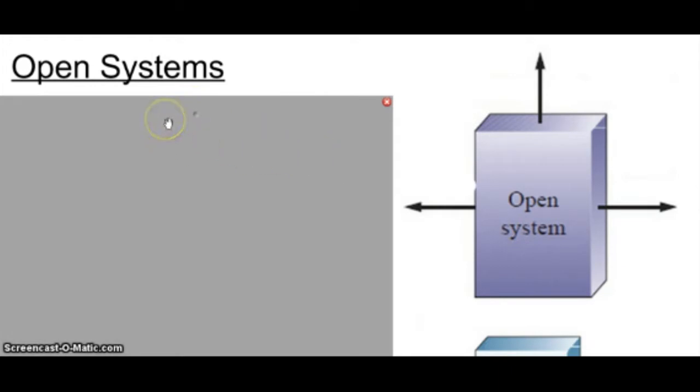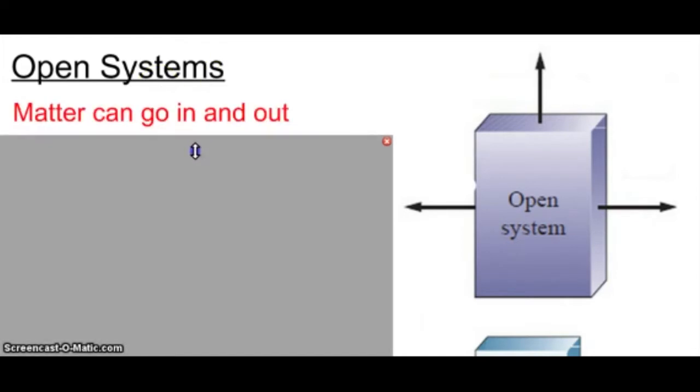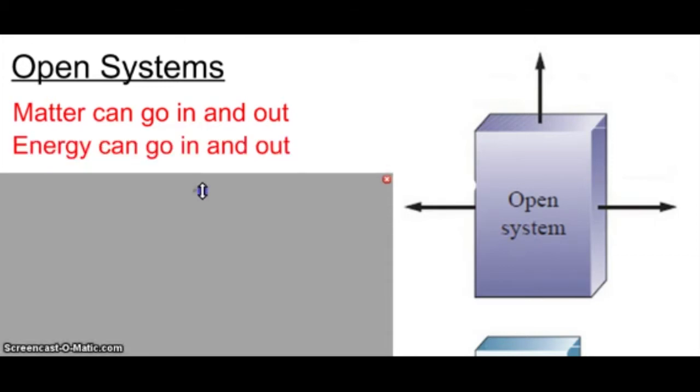So the first type of system we need to know is an open system. An open system, matter can go in and out, so air can go in and out, air, solids, gases, people, whatever, can go in and out, and energy can go in and out.